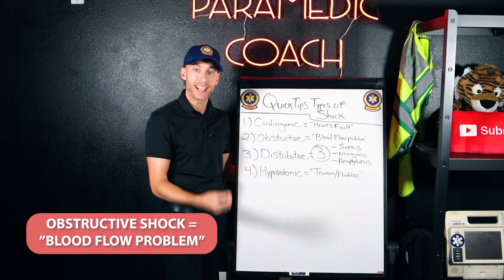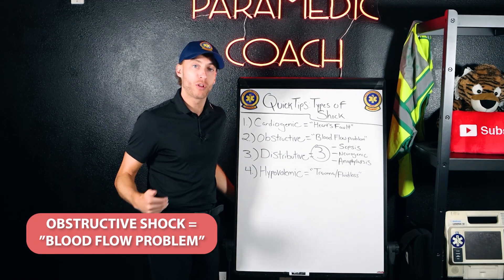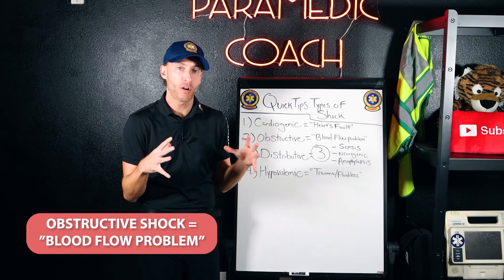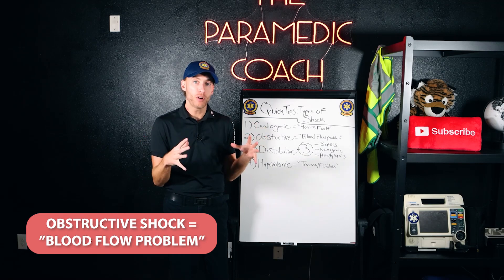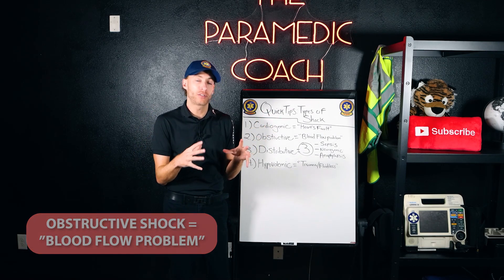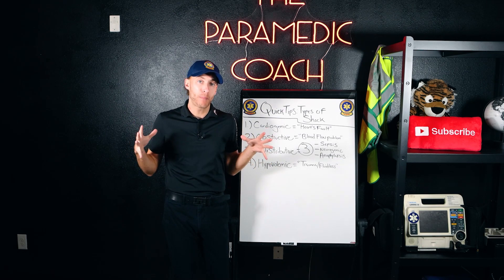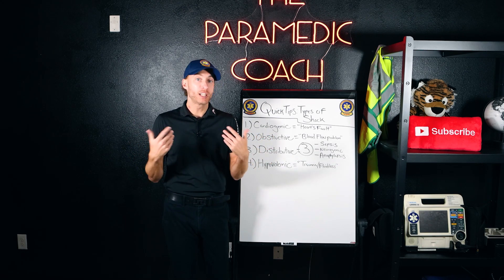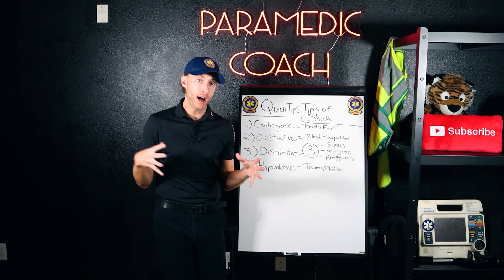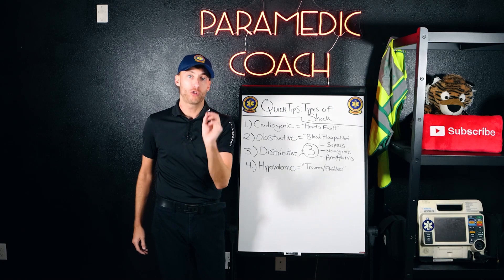Obstructive shock, our second type of shock, is a blood flow issue. Cardiac tamponade will squeeze around the heart so it fails as a pump — it's a flow issue, not the heart's fault. Tension pneumothorax is not the heart's fault either, but it's putting pressure on the heart — a blood flow issue. Pulmonary embolism is going to block an artery — also a blood flow issue. That's obstructive shock.